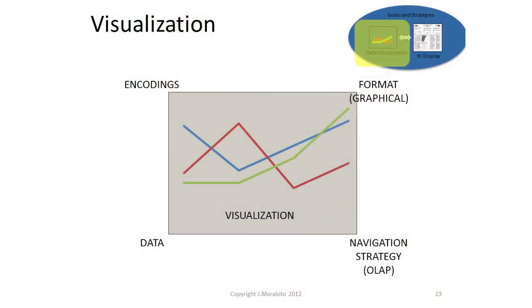Now let's move to the lower left of our model — the visualization itself. Here we have four design parameters, and these are designed jointly: the data itself, the visualization encodings — meaning our decision to use color, a thick line, a thin line, a solid line, or a dotted line — our format, meaning whether we're going to use a line chart or a pie chart, and the navigation strategy, meaning how we're going to navigate through the data and through the visualization. All four of these are designed jointly.